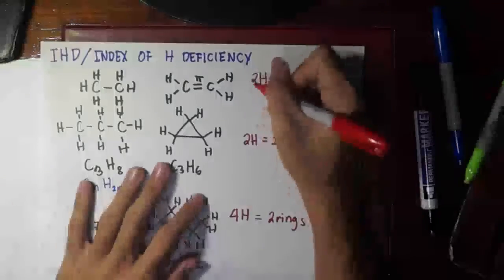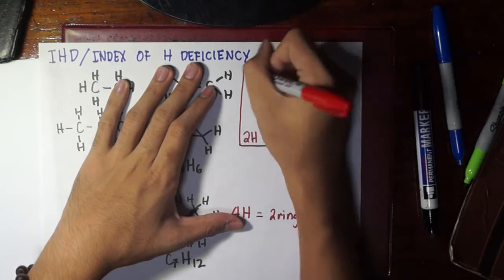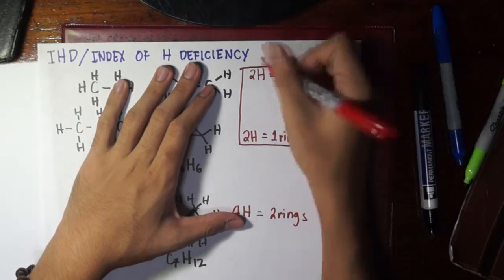So, meaning that we could have this guideline. That for every pi bond or for every ring, we spent 2 hydrogens. And so, let's try to use that principle in a certain example.